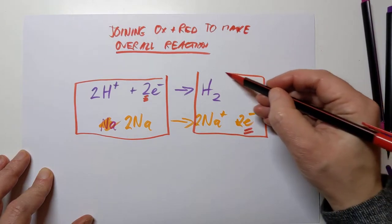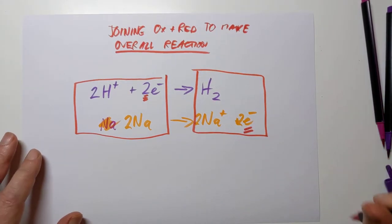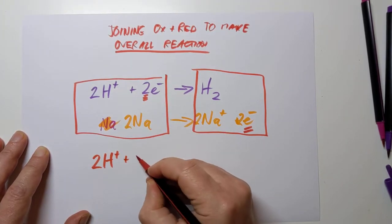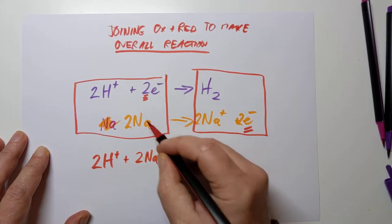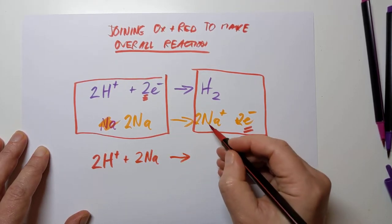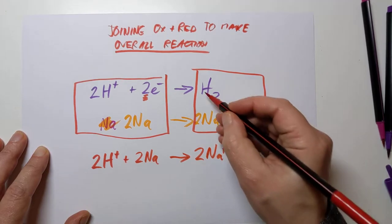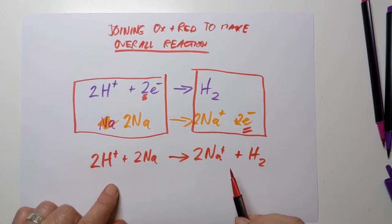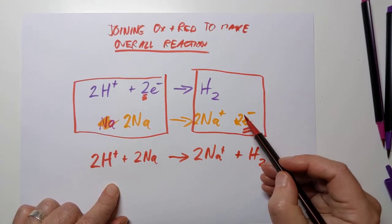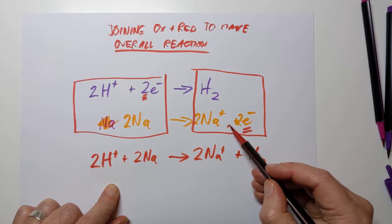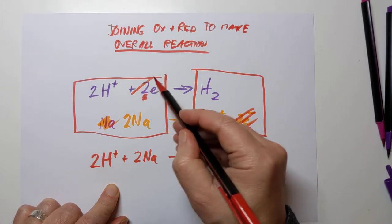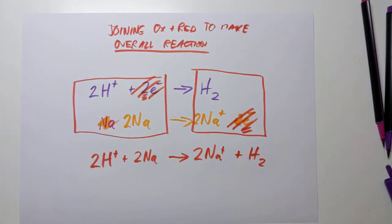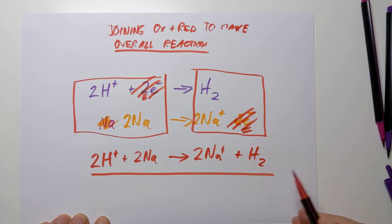What we can do now is we can just squash everything together on this side of the arrow and everything together on this side of the arrow with one important exception. So we've got two H⁺ reacting with two sodium ions to make two sodium ions, one plus ions, and an H₂ molecule. Now, you might have noticed I have not made a mistake here. You will lose your marks if you include the electrons. Don't show any electrons. The reason is because, a bit like maths, two electrons on this side, two electrons on this side, they cancel out. So that is the overall reaction there.